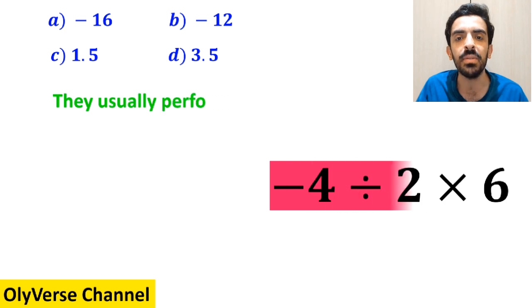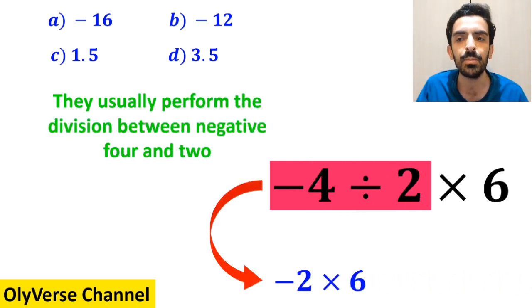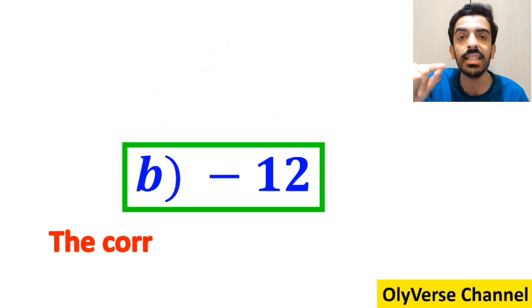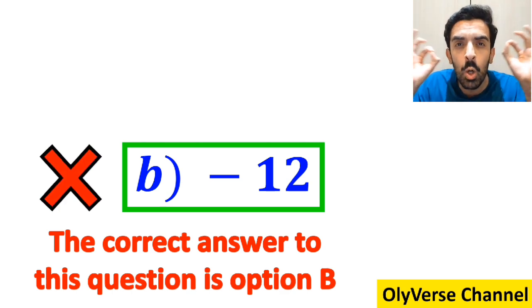The next step they usually perform the division between negative 4 and 2 and simplify this expression to negative 2 multiplied by 6, which finally gives them the answer negative 12. And immediately they say that the correct answer to this question is option b. However, this answer is absolutely wrong.